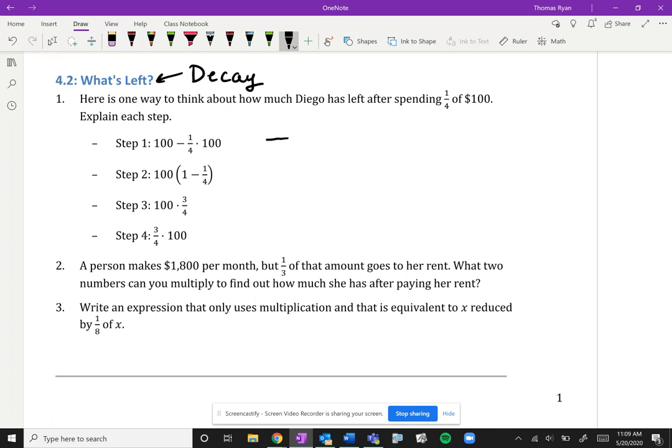Then we're taking away a quarter of the total. So this is where we're asking in step one we're saying we start with the hundred dollars and we subtract a quarter of the hundred dollars. So that's what we're saying right here. We start with a hundred and we subtract a quarter of it because you spent a quarter of your money.